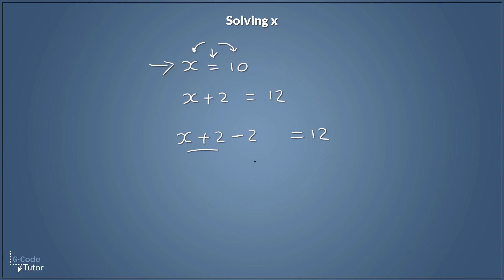The way we balance the equation is whatever we do to one side of the equals, we also have to do to the other side. It's the balance — it's the fulcrum point. So if we minus 2 from this side we also have to minus it from the other side. We minus 2 to remove the plus 2, and then we also subtract 2 on the other side to balance the equation. So x plus 2 minus 2 is just x, because plus 2 minus 2 is 0. Now we have x equals 12 minus 2, so x equals 10.